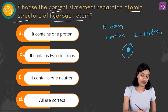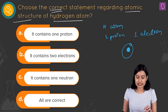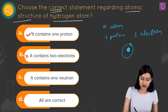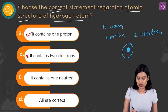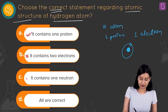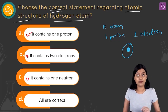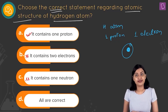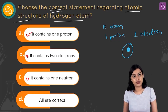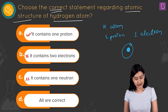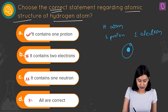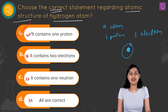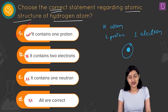It contains one proton — absolutely true. It contains two electrons — no, it does not. It contains one neutron — no, hydrogen only contains a single proton. If they were talking about any isotope of hydrogen then yes we could talk about neutrons, but here no. 'All are correct' is absolutely not right. Option A, 'it contains one proton,' is going to be the right answer to this question.